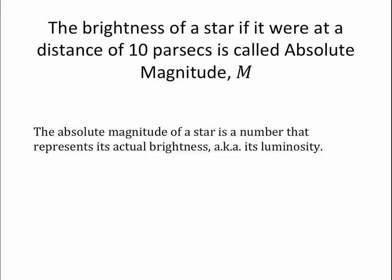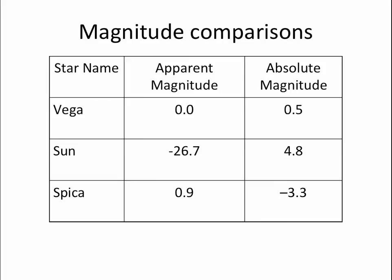An absolute magnitude is how bright a star would appear from Earth if we magically moved it to 10 parsecs — that becomes our comparison distance. Here are some comparisons. Vega's apparent magnitude is zero, and its absolute magnitude is 0.5. Vega is a little closer to us than 10 parsecs, so if we move it farther away, it appears fainter. If Vega were exactly 10 parsecs away, its absolute magnitude would be 0.5.